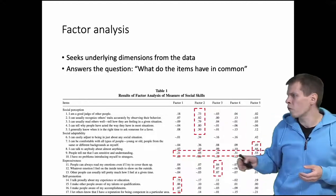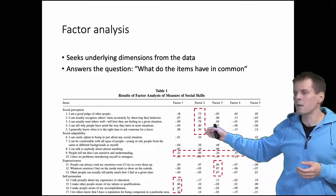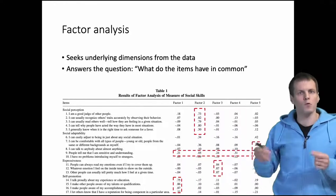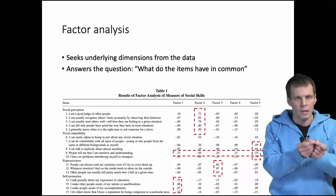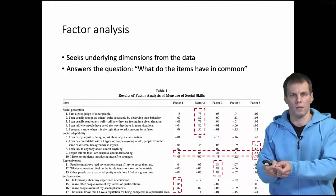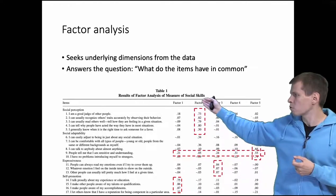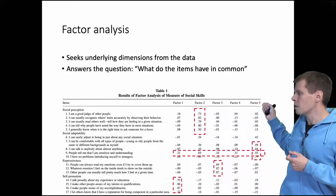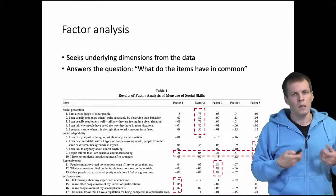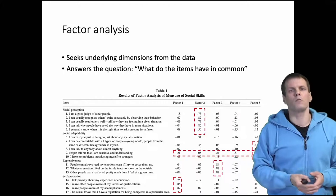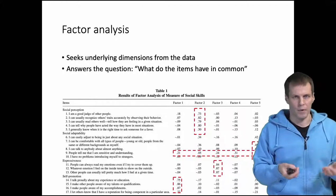So this is factor analysis. You look for a pattern where each item loads on the same—that they are supposed to measure the same thing—loads on the same factor and not on any other factors. Then we would typically label these factors. These would be labeled social perception, this would be labeled social adaptability, and so on. So this is the tool that we use for validating items empirically.